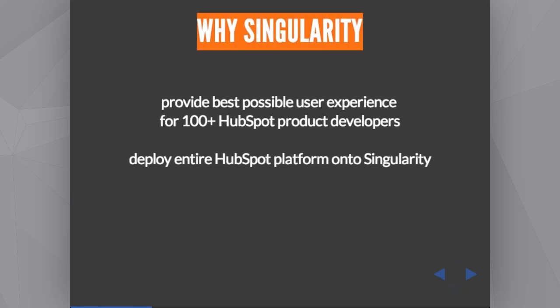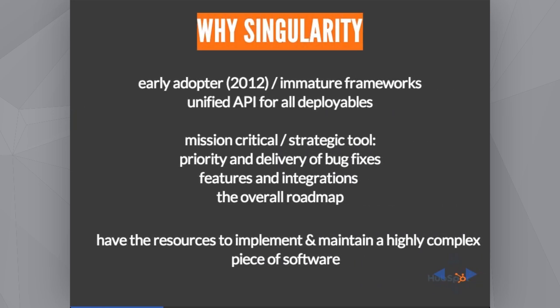So, why Singularity? For the Platform team, the developers are our customers. We want to provide them with the best possible user experience — a way to deploy continuously their software every time, any time, every day. We have 100 of them, so it's very important. We took a strategic decision that we want Singularity and Mesos not to be just a tool for some people but to move everything to it. When Singularity and Mesos becomes a mission-critical and strategic tool, we want influence over the roadmap, how we add new features, and how we do the debugging.